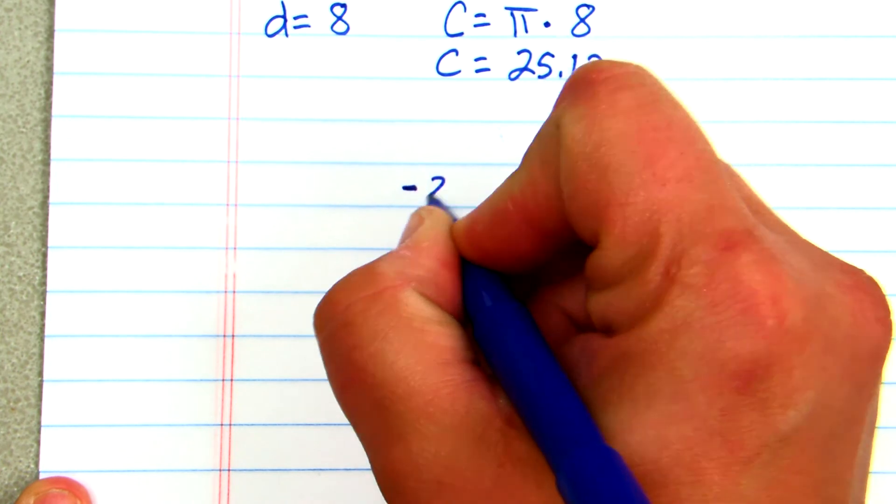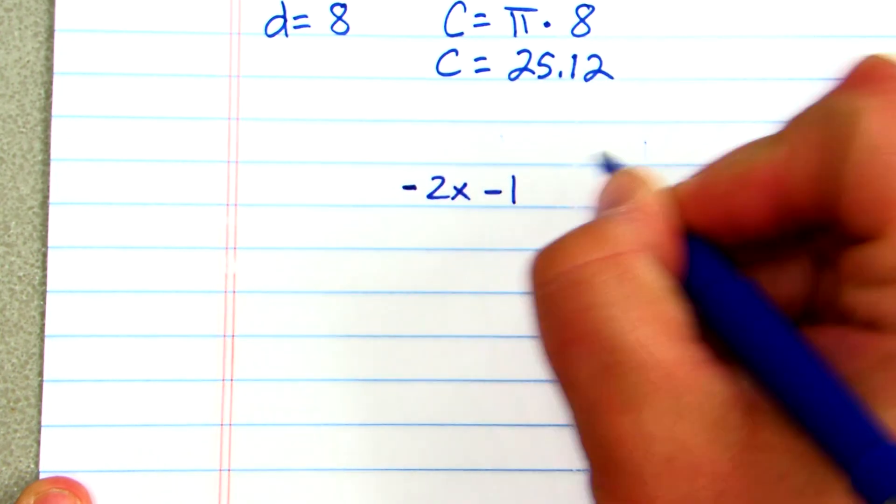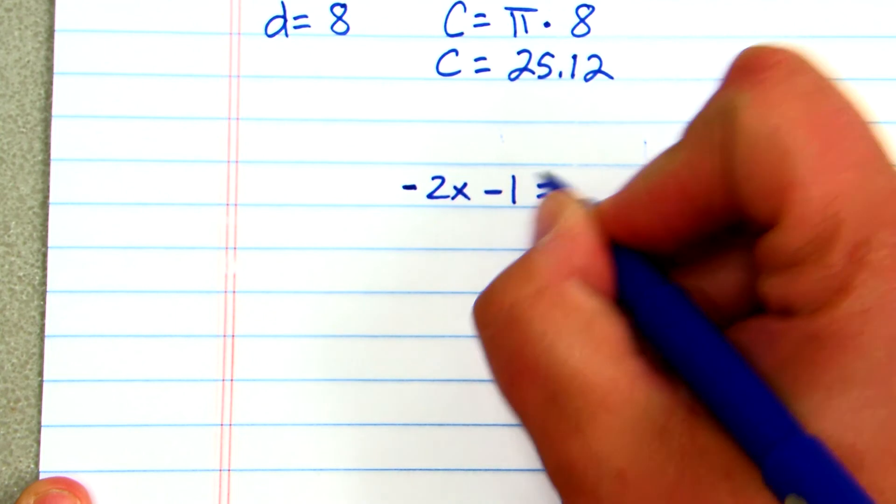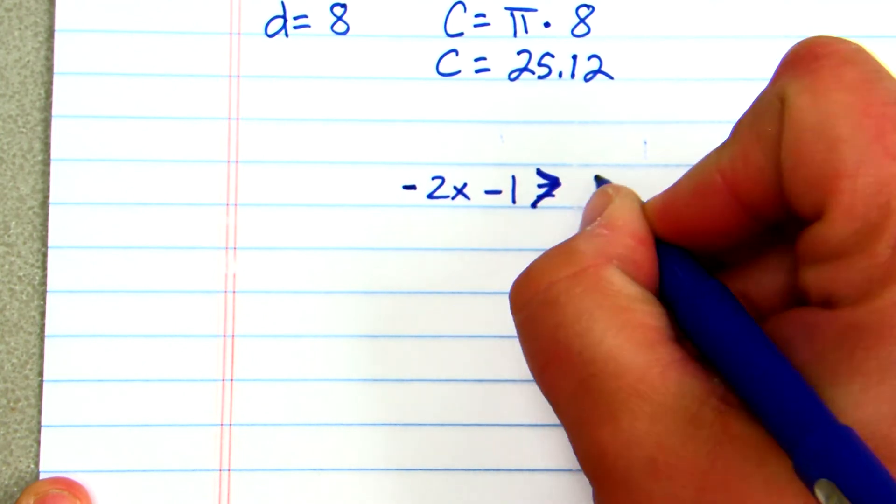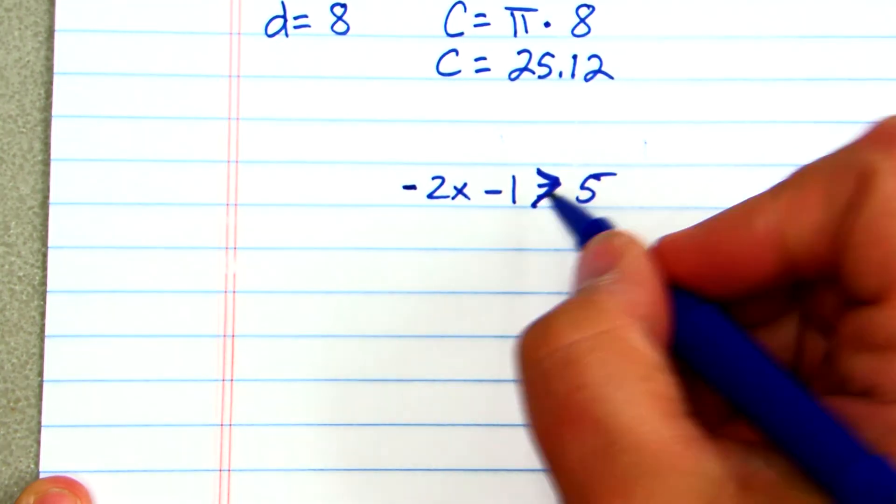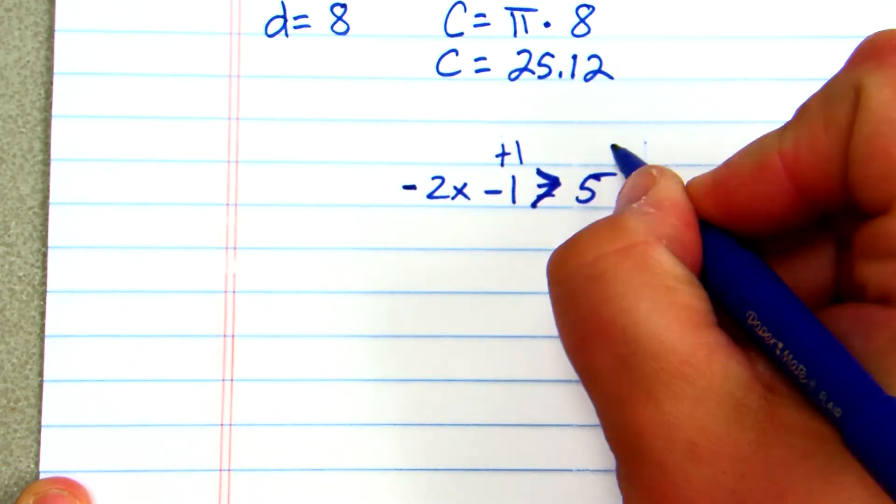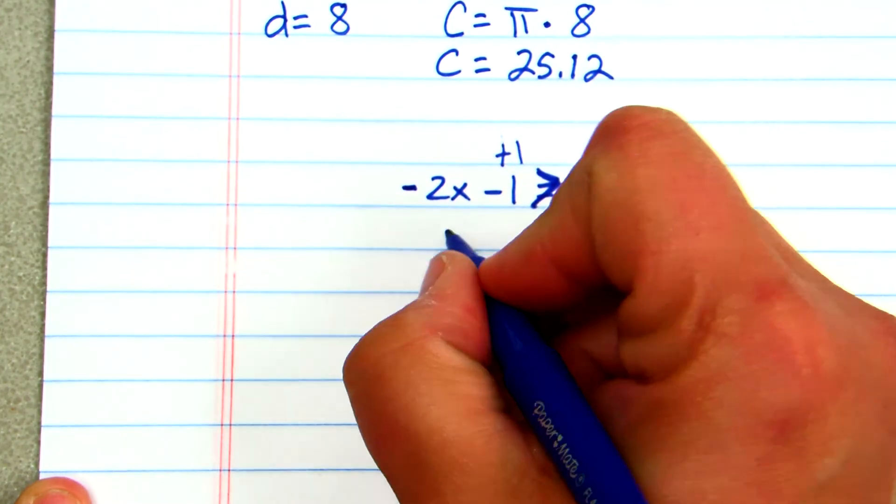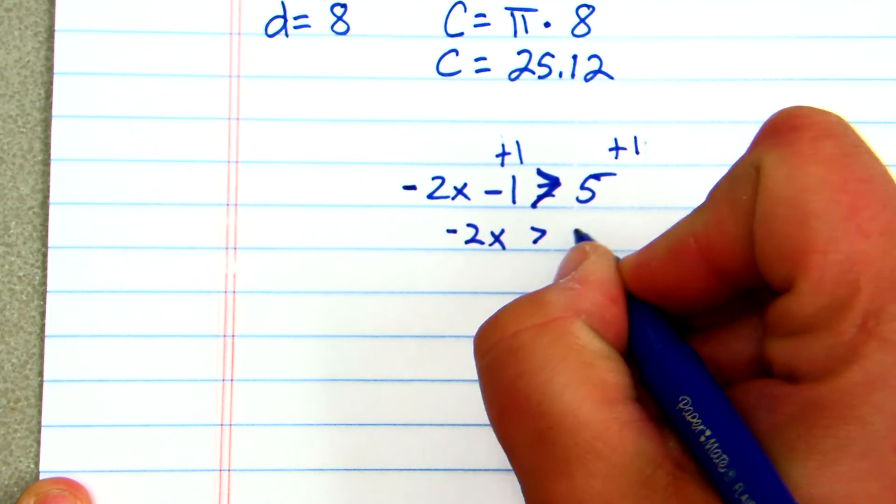So if I have something like negative 2x minus 1 is greater than 5, my first step would be to add 1 to both sides. That would give me negative 2x is greater than 6.